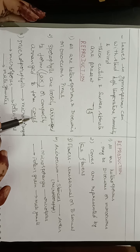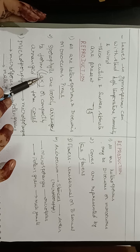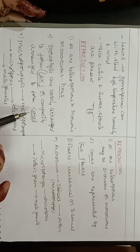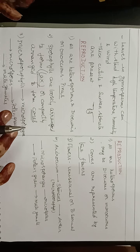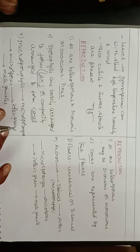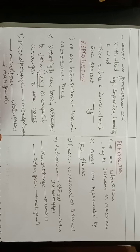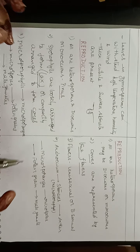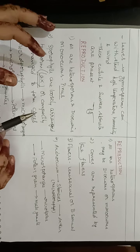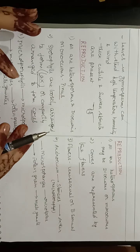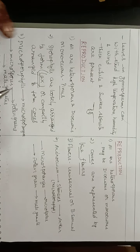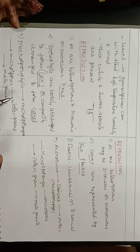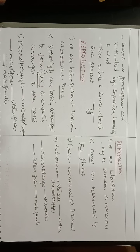All microsporophylls together, compactly arranged, form the male cone. All megasporophylls together may be loosely arranged — as in Cycas — or form a compact cone as in Pinus. So male cone and female cone can be separately formed.